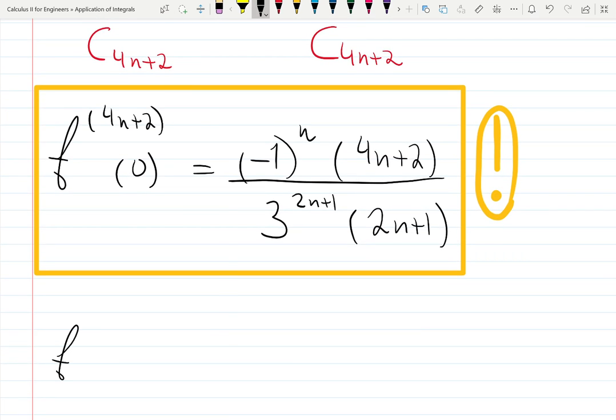To find 10s derivative at 0, I just understand that n will be 2. How do I know? Because 4n plus 2 is 10. If you solve this, n is 2. I need this to be 10. 10s derivative. So n is 2.